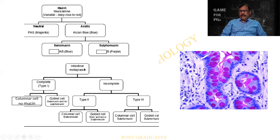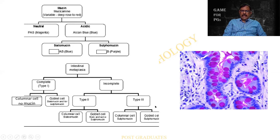There is a second group called intestinal metaplasia. Whenever there is a gastritis, you find that the gastric epithelium is being replaced by an intestinal type of epithelium — it can be small intestine or large intestine. There can be complete metaplasia or incomplete metaplasia. In complete metaplasia, there is a columnar cell but no mucin, and then there can be goblet cells having sialomucin or sulphomucin. In the incomplete type, there are two types — type 2 and type 3 — each having sialomucin and sulphomucin.